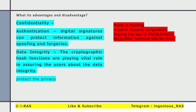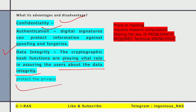The advantages and disadvantages of cryptography: Advantages include confidentiality, authentication, digital signatures that can protect information against spoofing and forgeries, data integrity — no one can alter the data — and it plays a vital role assuring the user about data integrity, and protects privacy. However, there are some disadvantages: it is prone to hacking, requires massive computation, is not accessible to a layman as it needs expertise, and sharing a key is problematic.